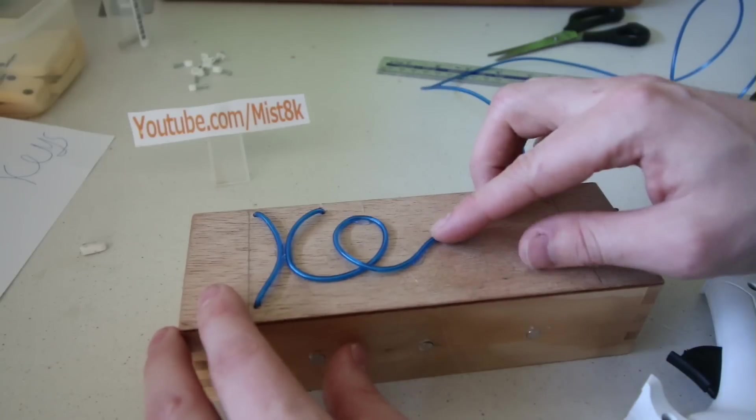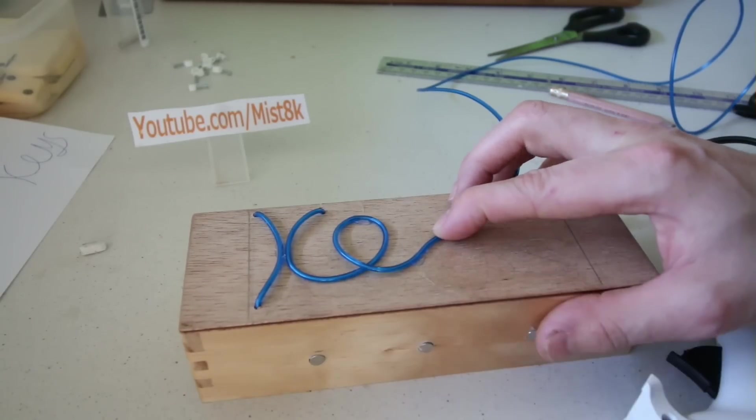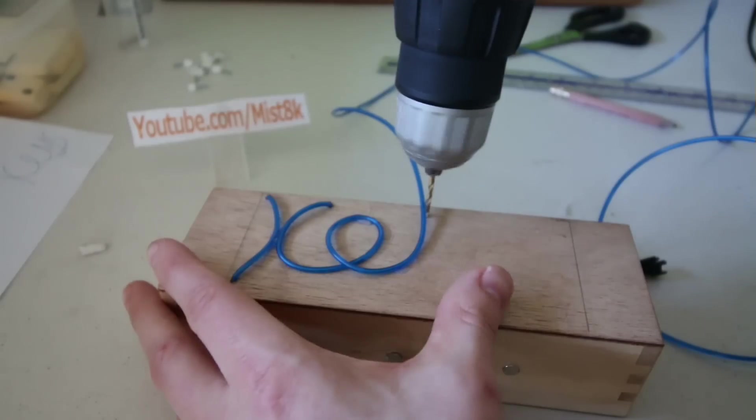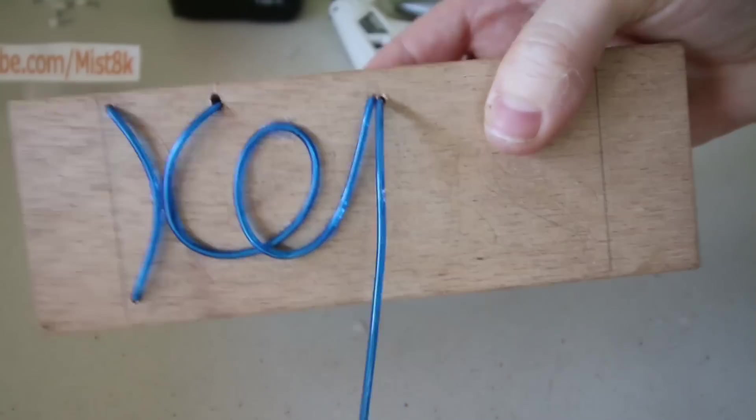I simply looped the wire around and stuck it into place to create the E. For the Y I needed a slightly bigger hole so I could run the wire back through on itself.